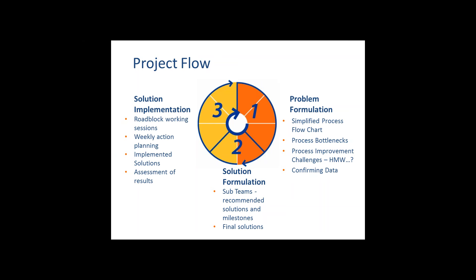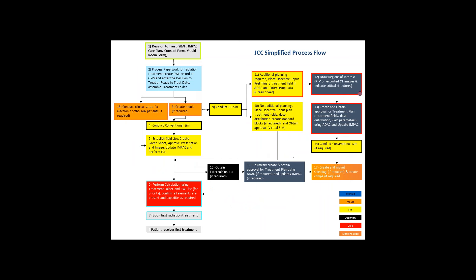Weekly action planning is done where people get together and plan how to implement, and then we assess the results to see how well we did. Then we go around the wheel again if we need to make it better.